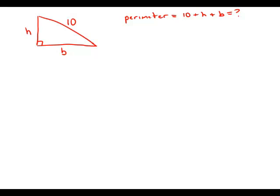Notice we already have one equation relating these three quantities, namely the Pythagorean theorem, which tells us that h² plus b² equals 10², which is 100. So right now we have one equation with two unknowns.